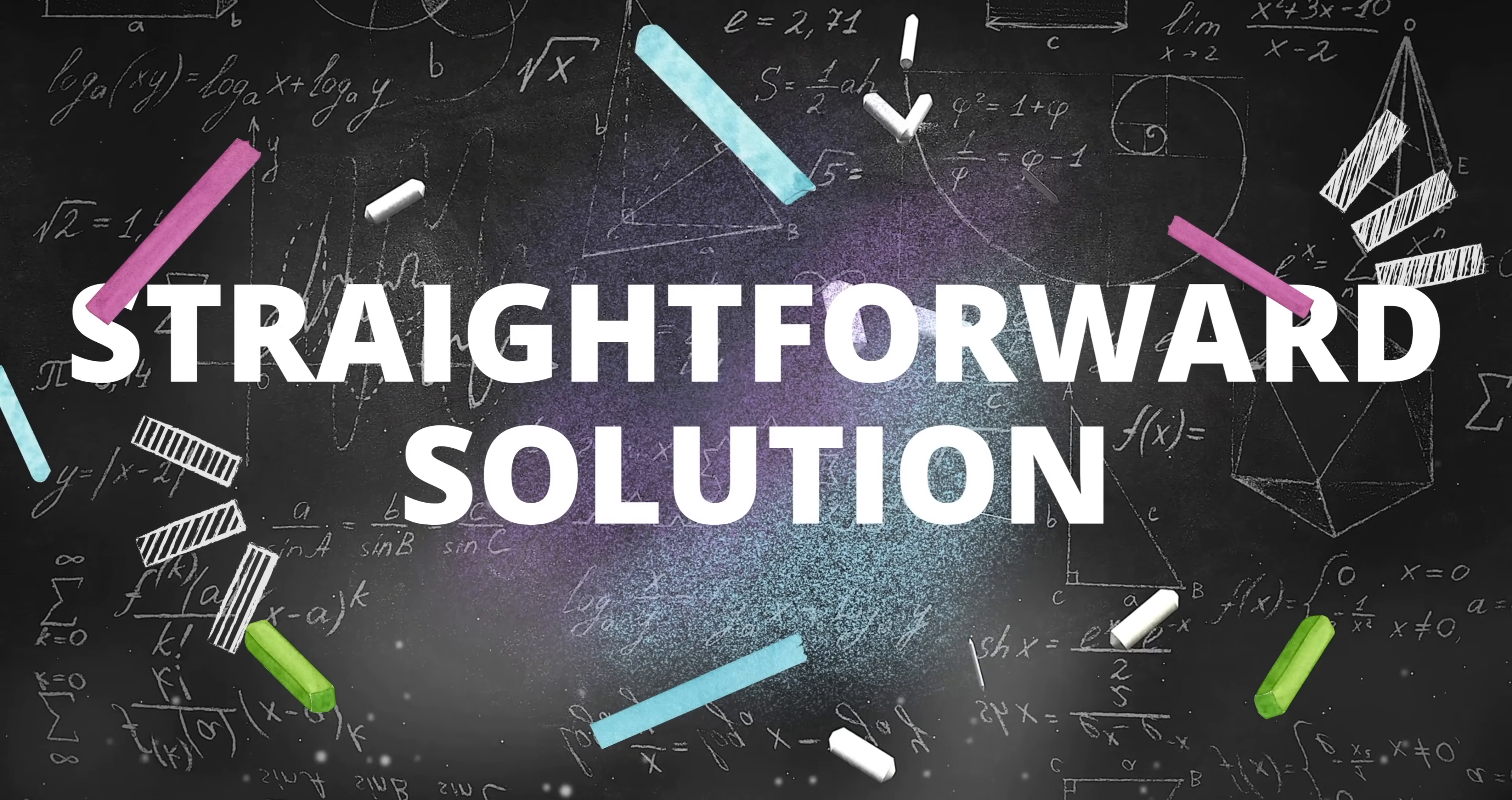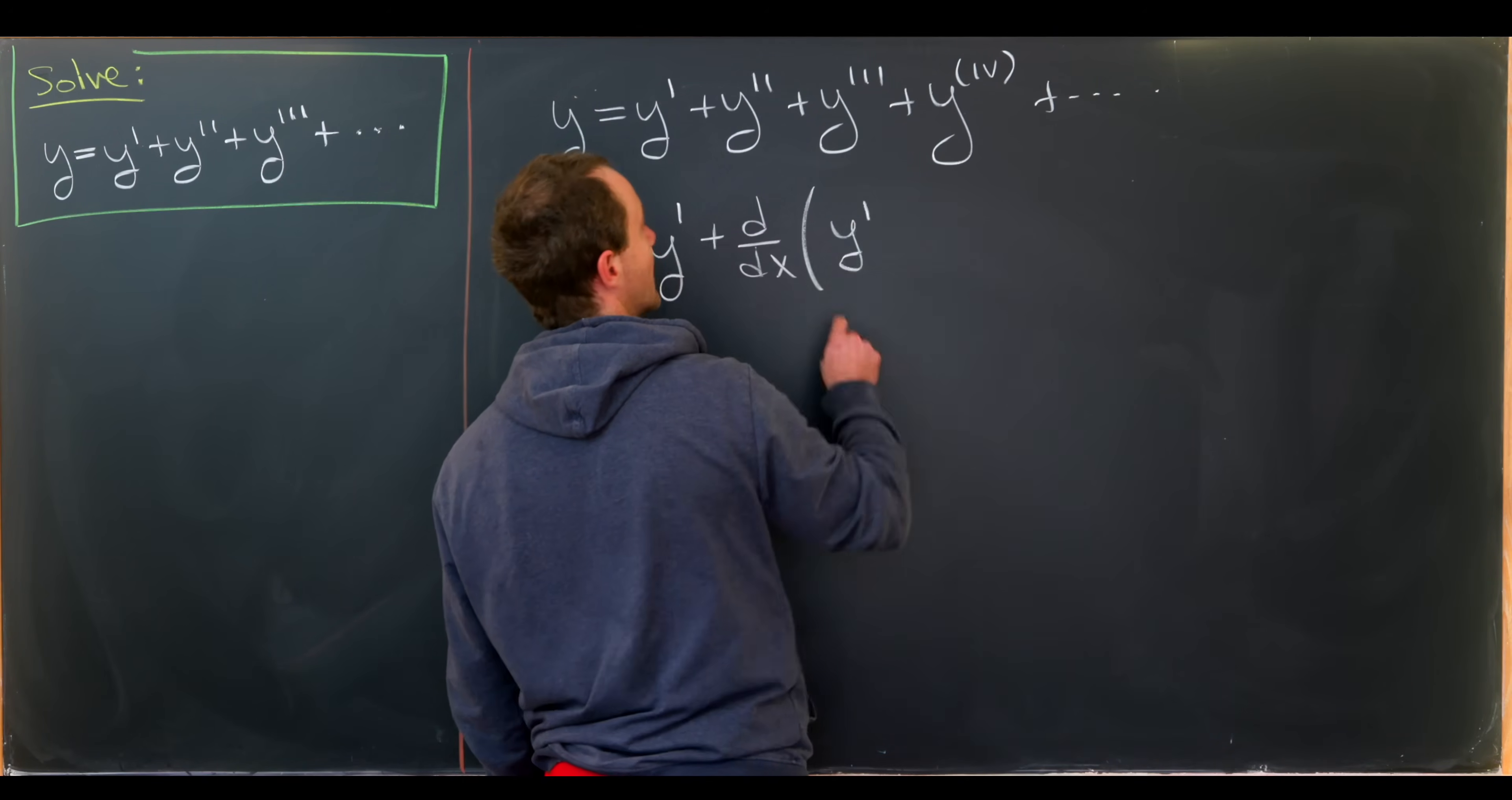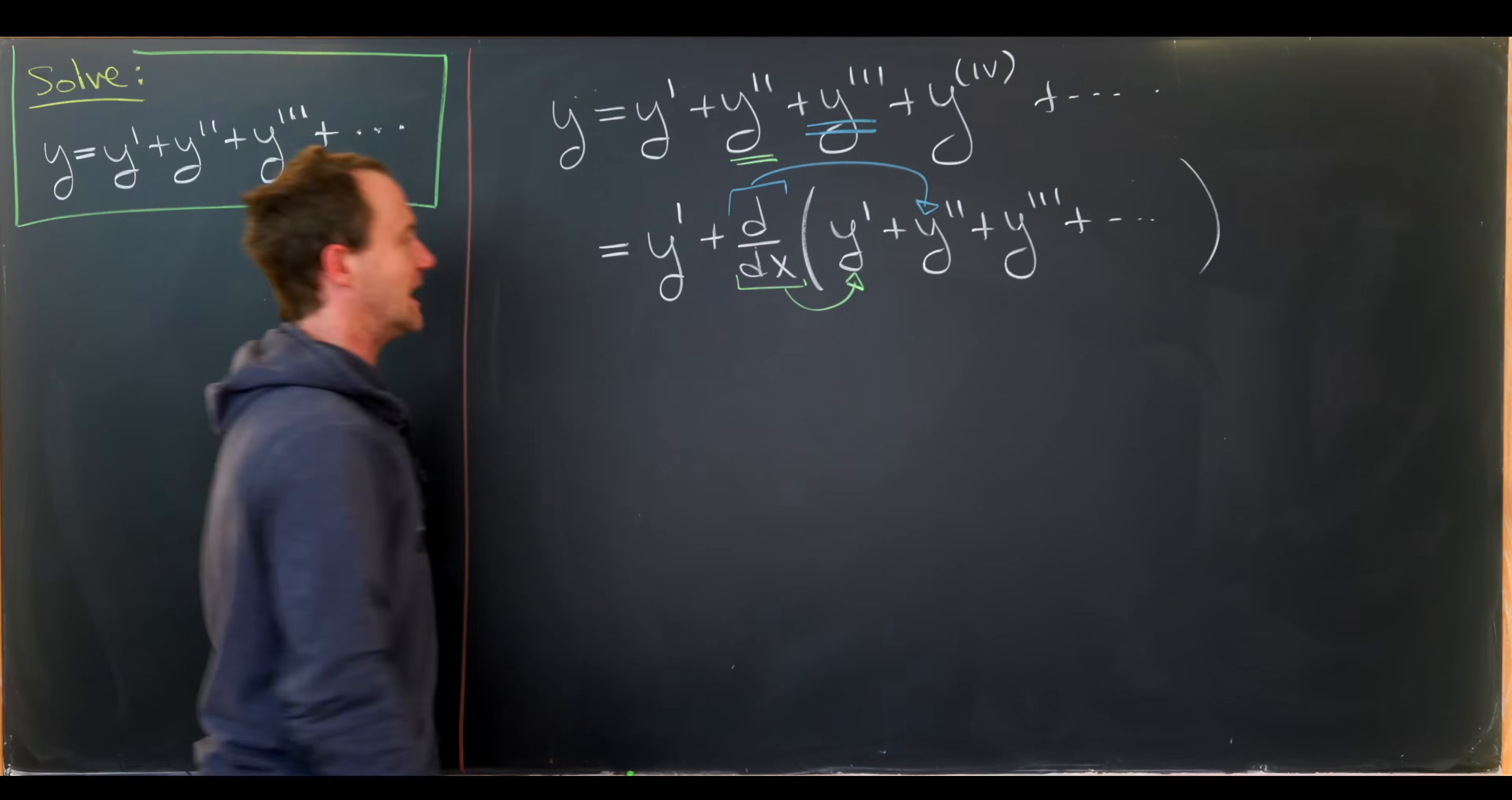Okay so let's get started with our straightforward solution. I'm gonna copy this differential equation over here. And I'm gonna make the following nice observation. I can take this right-hand side and rewrite it as y prime plus the derivative with respect to x of y prime plus y double prime plus y triple prime plus dot dot dot.